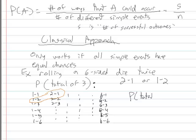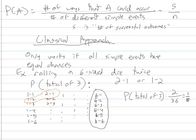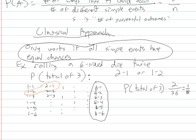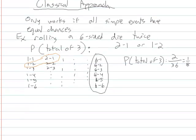So probability of getting a total of three is two out of 36. I got 36 because there's six simple events that start with a roll of one, six that start with a roll of two, six that start with a roll of three and so on, up until six that start with a roll of six. Six times six is 36. We can reduce this fraction to one over eighteen. And that is our classical approach to computing this probability. But it does rely on all simple events having equal chances. And that is important.